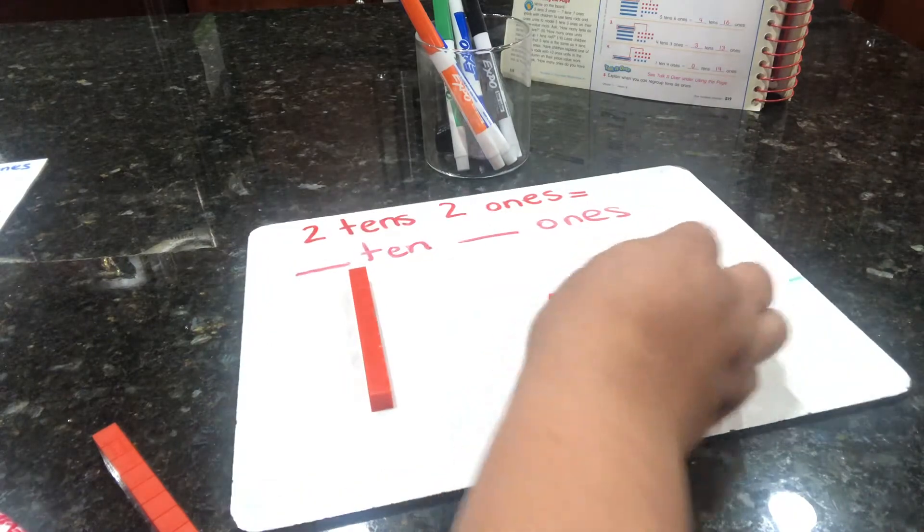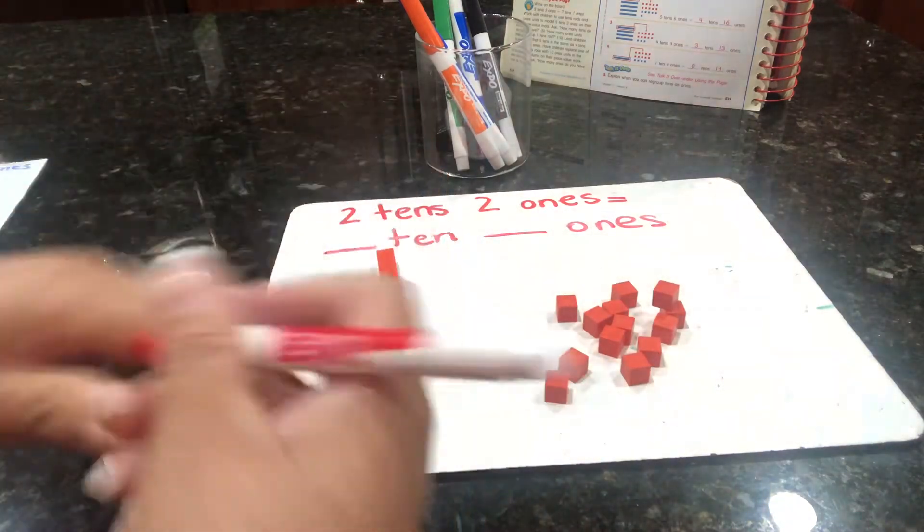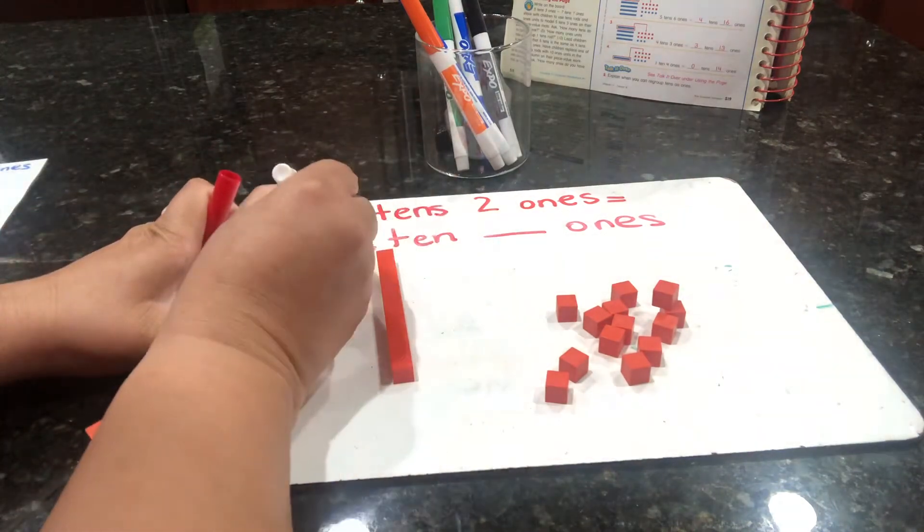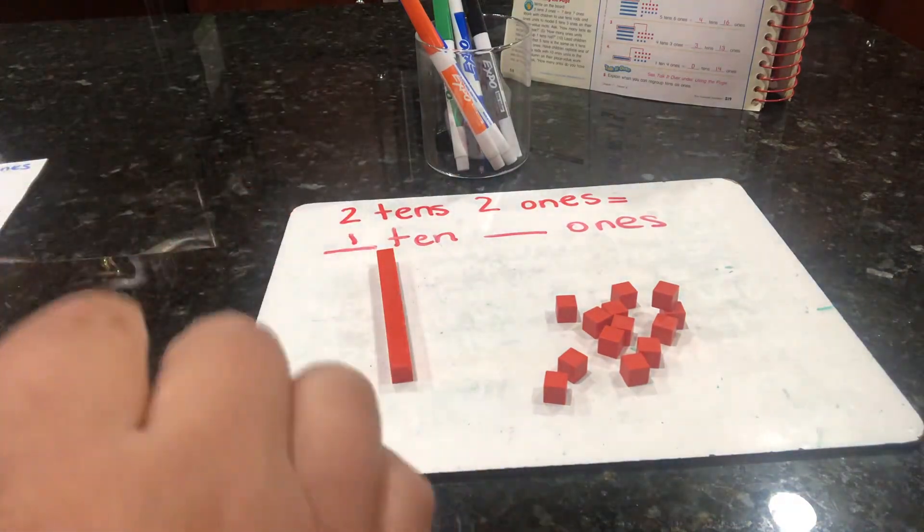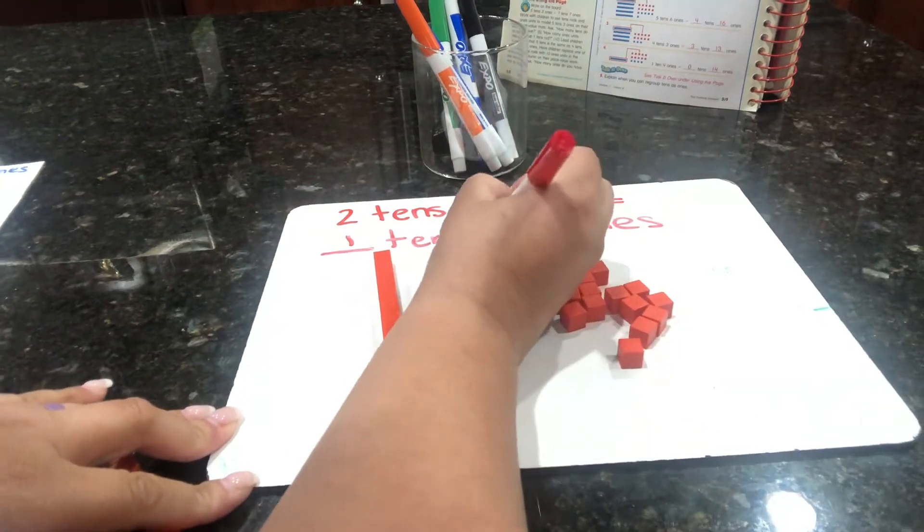Okay, so now we have how many tens? One ten. How many ones do we have? Twelve ones.